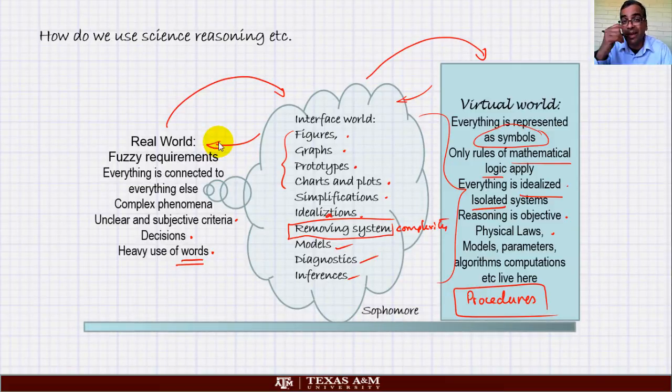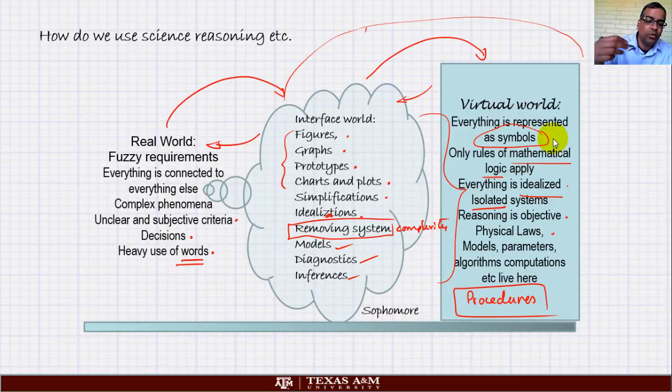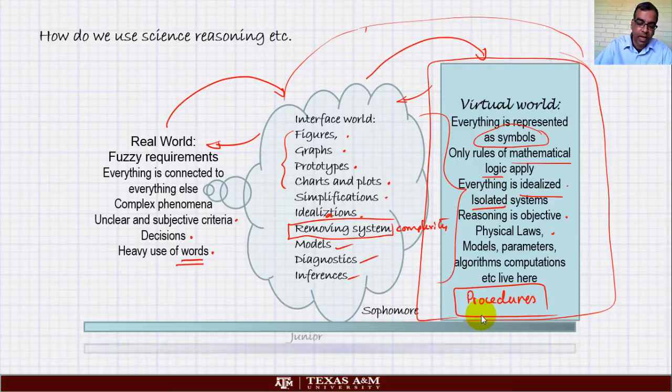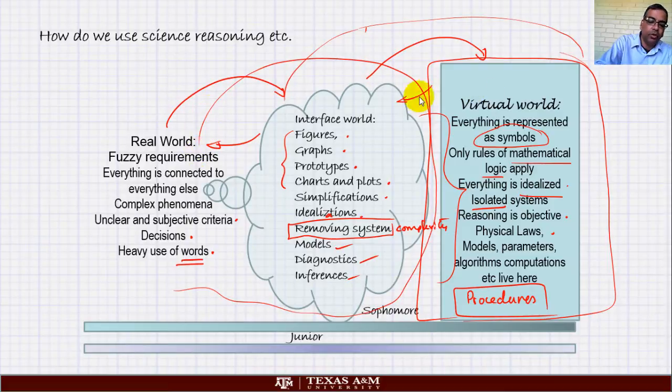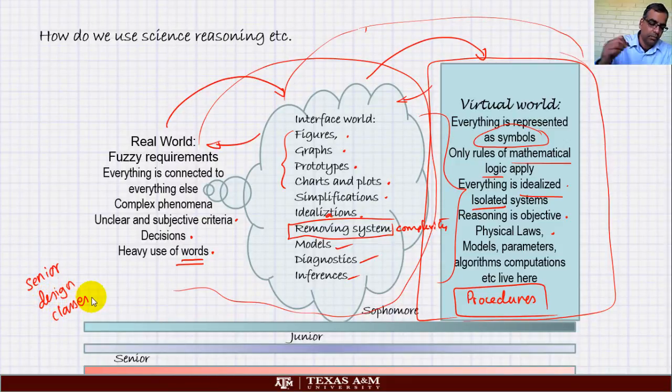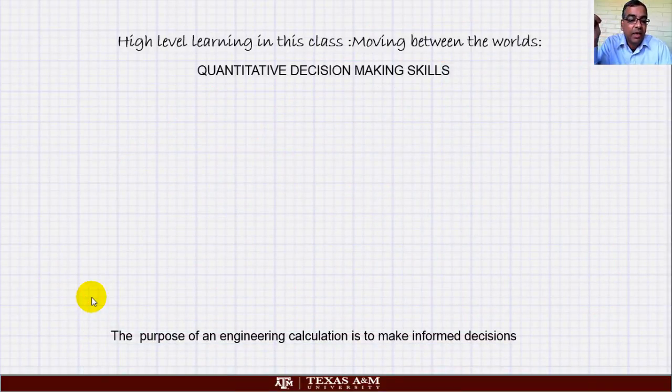If you are a sophomore, which is a second year student in engineering, you are likely to spend a lot of time in this portion talking about the interface world and the virtual world because we want you to get comfortable doing this part. By the time you become a third year student you are starting to work more here because now that you know this you will move here. Then by the time you get to be a senior this is where all your senior design classes are.